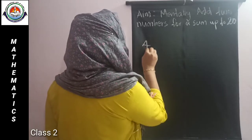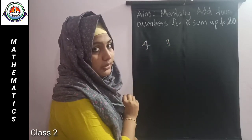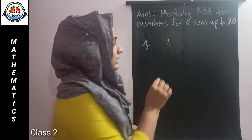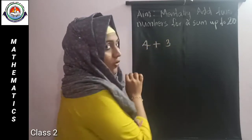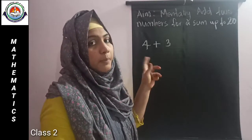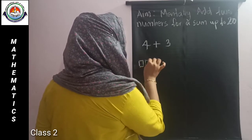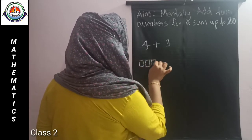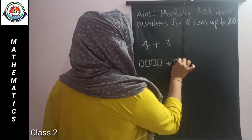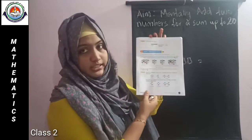Rohit has 4 marbles and Gautam has 3 marbles. We have to find the total number of marbles. We are going to add 4 plus 3. Then we can draw 4 ones blocks, then 3 — 1, 2, 3. It is already given in your textbook.